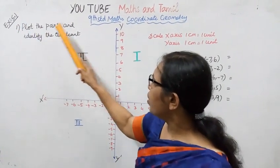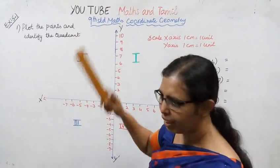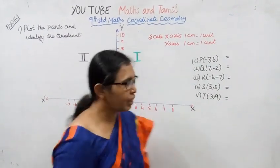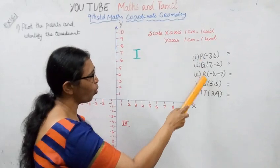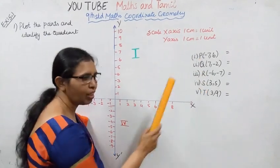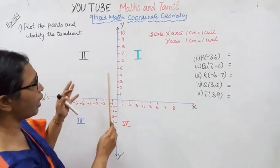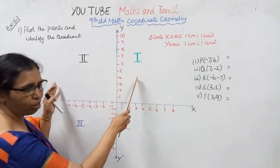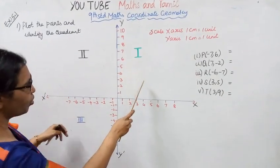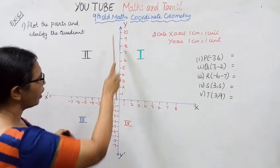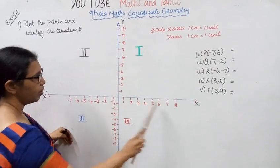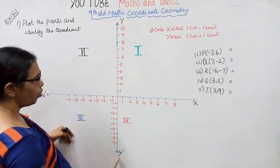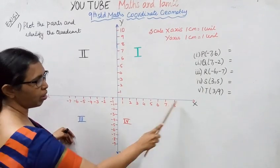Plot the points and identify the quadrant. We will plot points P, Q, R, S, T. The graph sheet has a vertical line and a horizontal line.